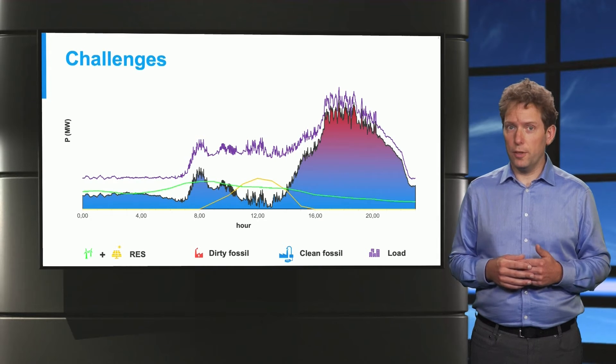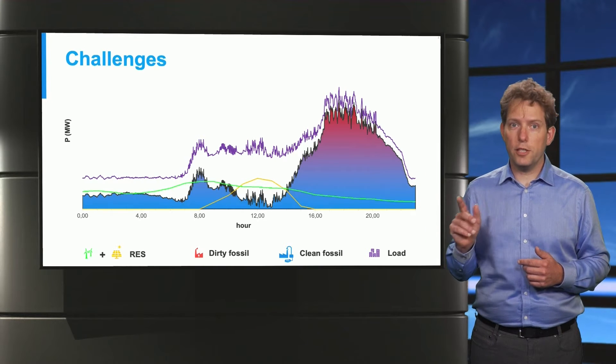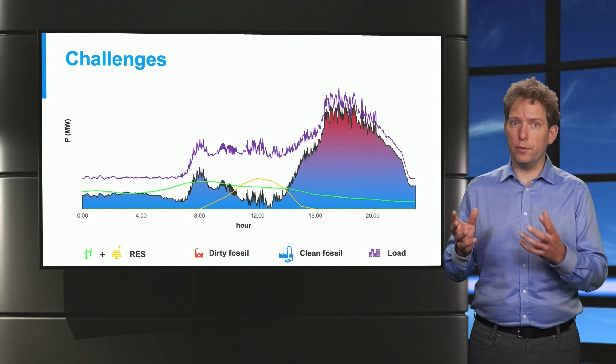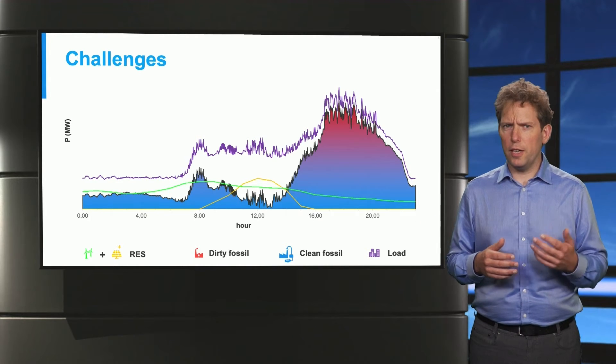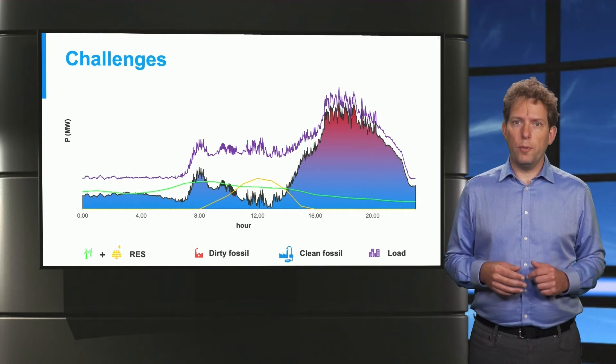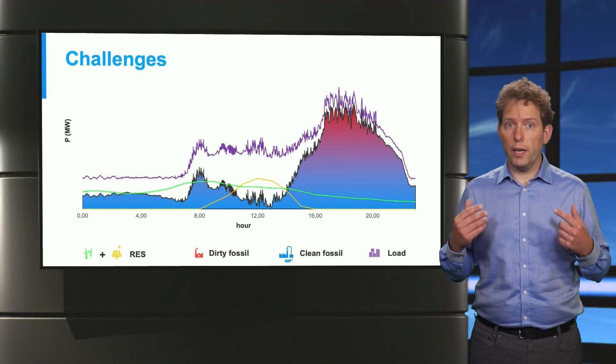So this remainder needs to be supplied using a combination of our dirty fossil and clean fossil plants. How do we decide which of these to use and when? And that's where we need to formalize our problem and where the models come in.